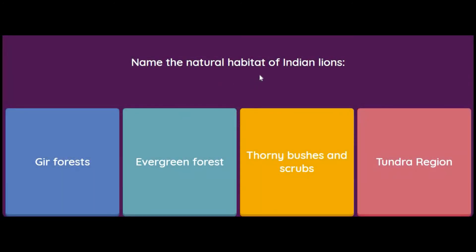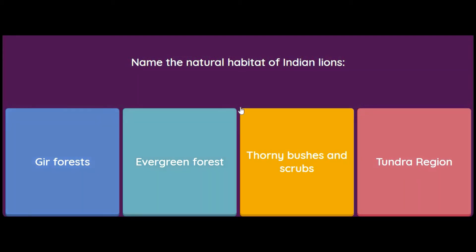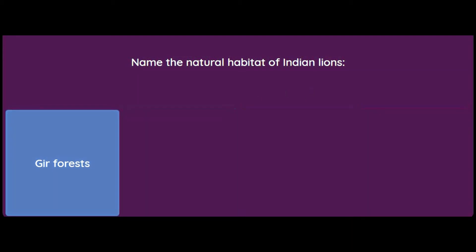Name the natural habitat of Indian lions — Gir forest, evergreen forest, thorny bushes and scrubs, or tundra region? Very easy again — it is Gir forest in Gujarat, which is the natural habitat of the Indian lion.